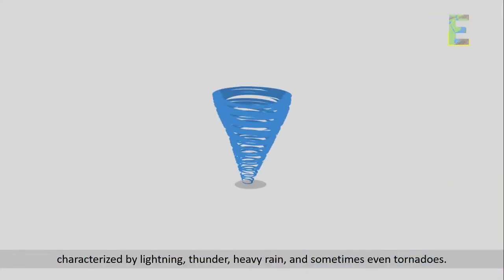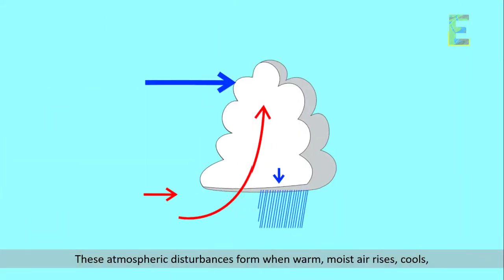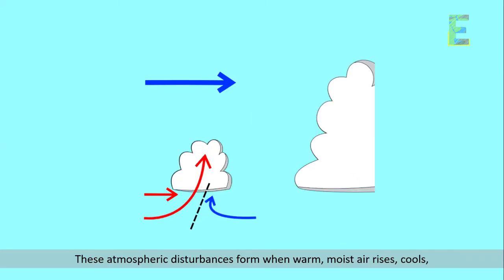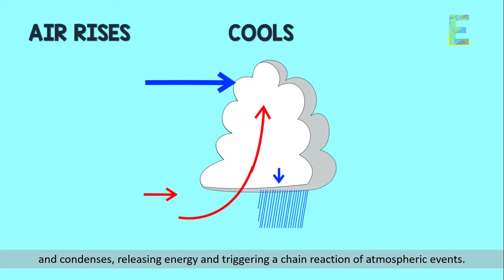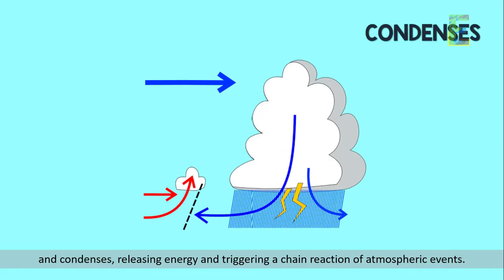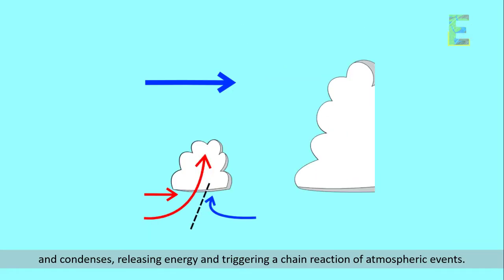Thunderstorms and lightning — thunderstorms are electrifying displays of nature's power, characterized by lightning, thunder, heavy rain, and sometimes even tornadoes. These atmospheric disturbances form when warm moist air rises, cools, and condenses, releasing energy and triggering a chain reaction of atmospheric events.